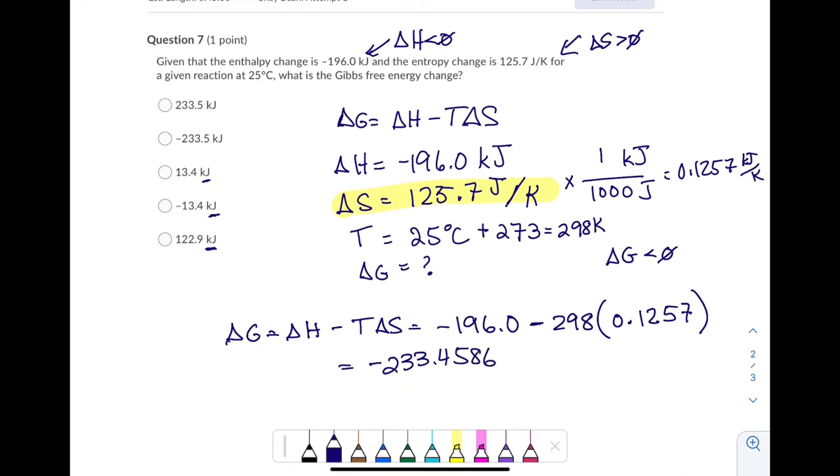If I look at all the answers that rounded to the first decimal place, you want to pay attention. If you're typing in an answer, pay attention to how many decimal places or sig figs it tells you to go to. And so my correct answer is negative 233.5 if we round it. And that is kilojoules. Again, negative delta G. We're expecting because this is spontaneous.